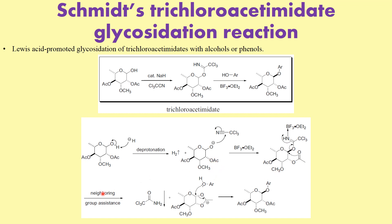This means the acetate group is in the perfect place to act as a neighboring group participant. So where you have an acetate group here, there is a back-side attack. A particular group leaves, and this is the intermediate that you form.